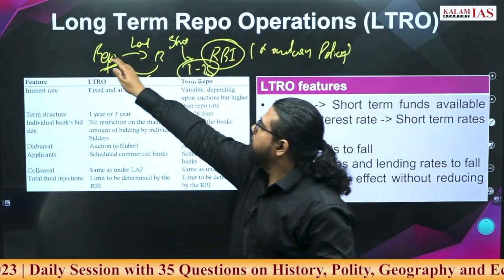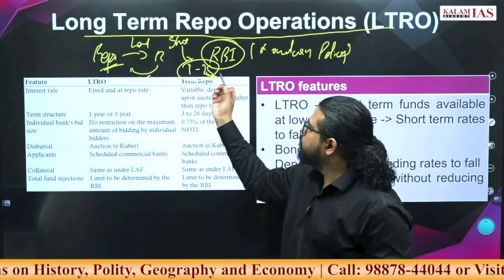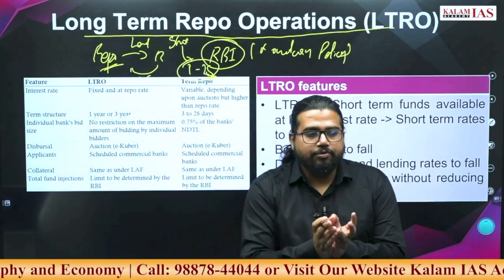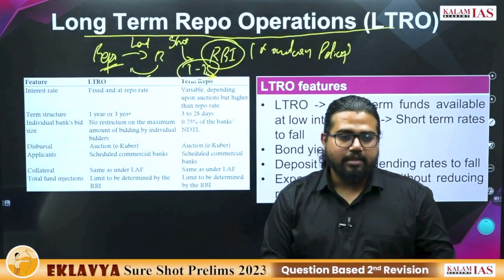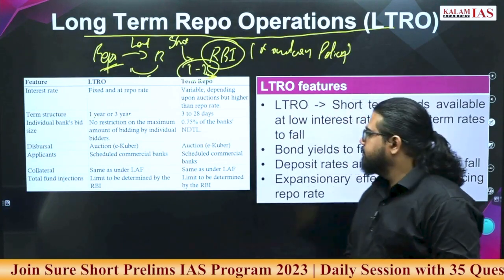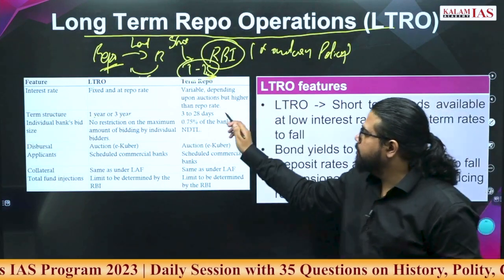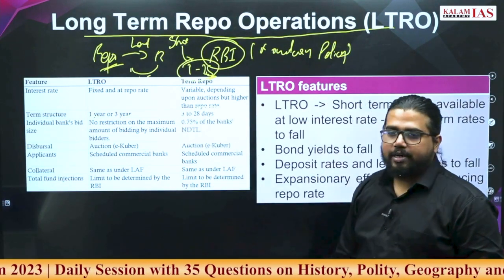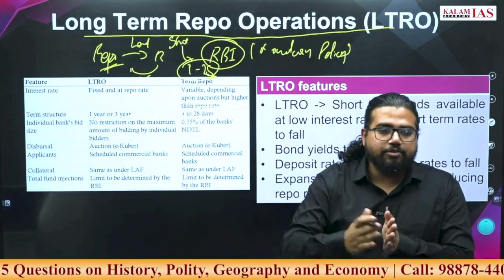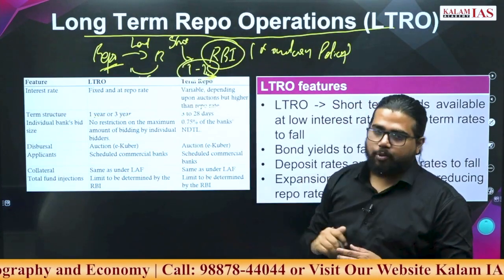What is long-term repo operations? There is only one change: this 28-day maturity changes to 1 to 3 years. That is, the term of the repo operation is made long term. The normal repo operation is 3 to 28 days. If the maturity of this repo operation is increased to 1 to 3 years, we call it long-term repo operations — LTRO.